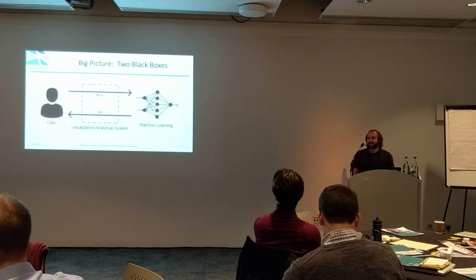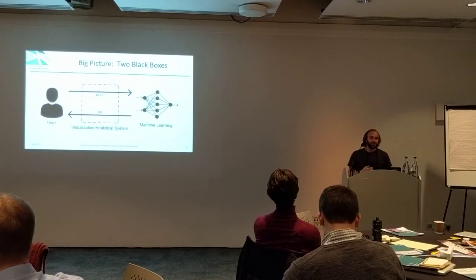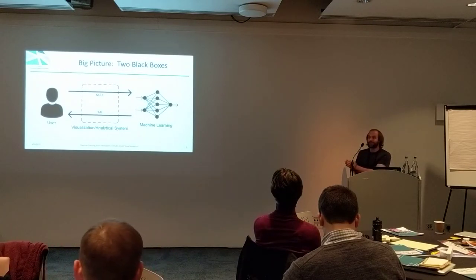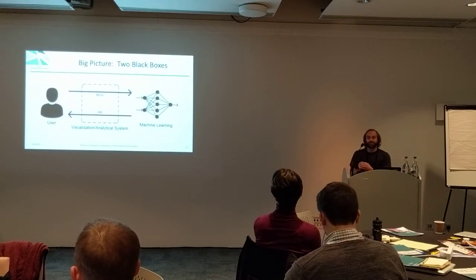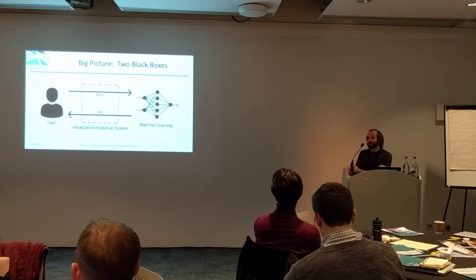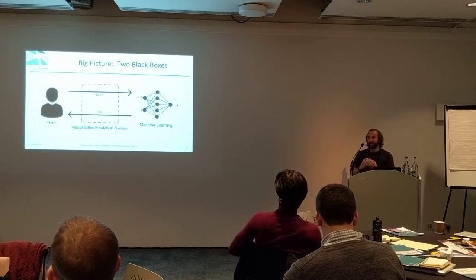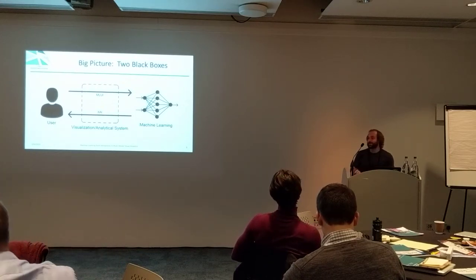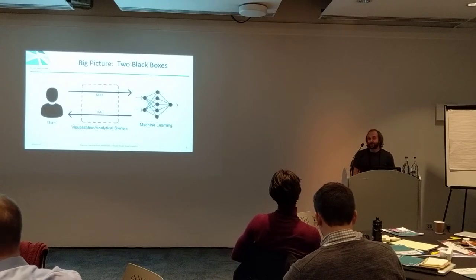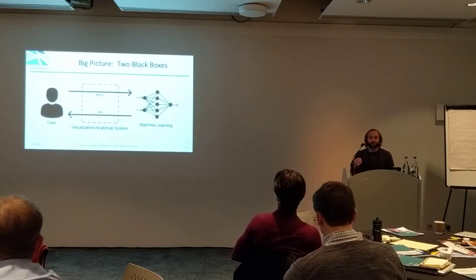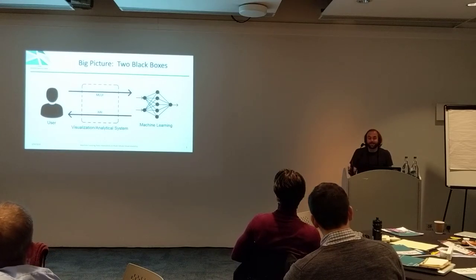The big picture idea behind my work and my research group's work is a two black boxes problem. There's the explainable AI idea: our machine learning is a black box and we want users to understand what the machine learning is actually doing so they can trust it more. But then the human is also a black box to the algorithm. If we want to support potentially ambiguous operations and interactions, the system needs to figure out the user's actual intent and learn from the user's current exploration track and cognition.